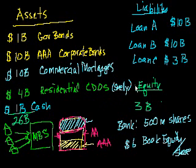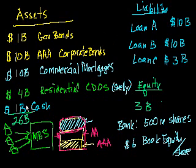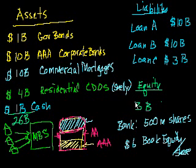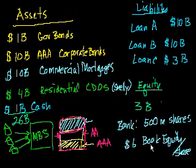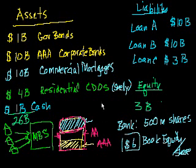There are two notions of equity. There's your book value of equity, which is the value of equity that comes out of your balance sheet. If you assume all of these numbers are accurate, the number that pops out on the equity side is the book value of your equity. As an example, Bank A is a public company with 500 million shares. If you take its $3 billion of equity and divide by 500 million shares, that gives $6 of book equity per share — so the stock is worth exactly $6 per share.